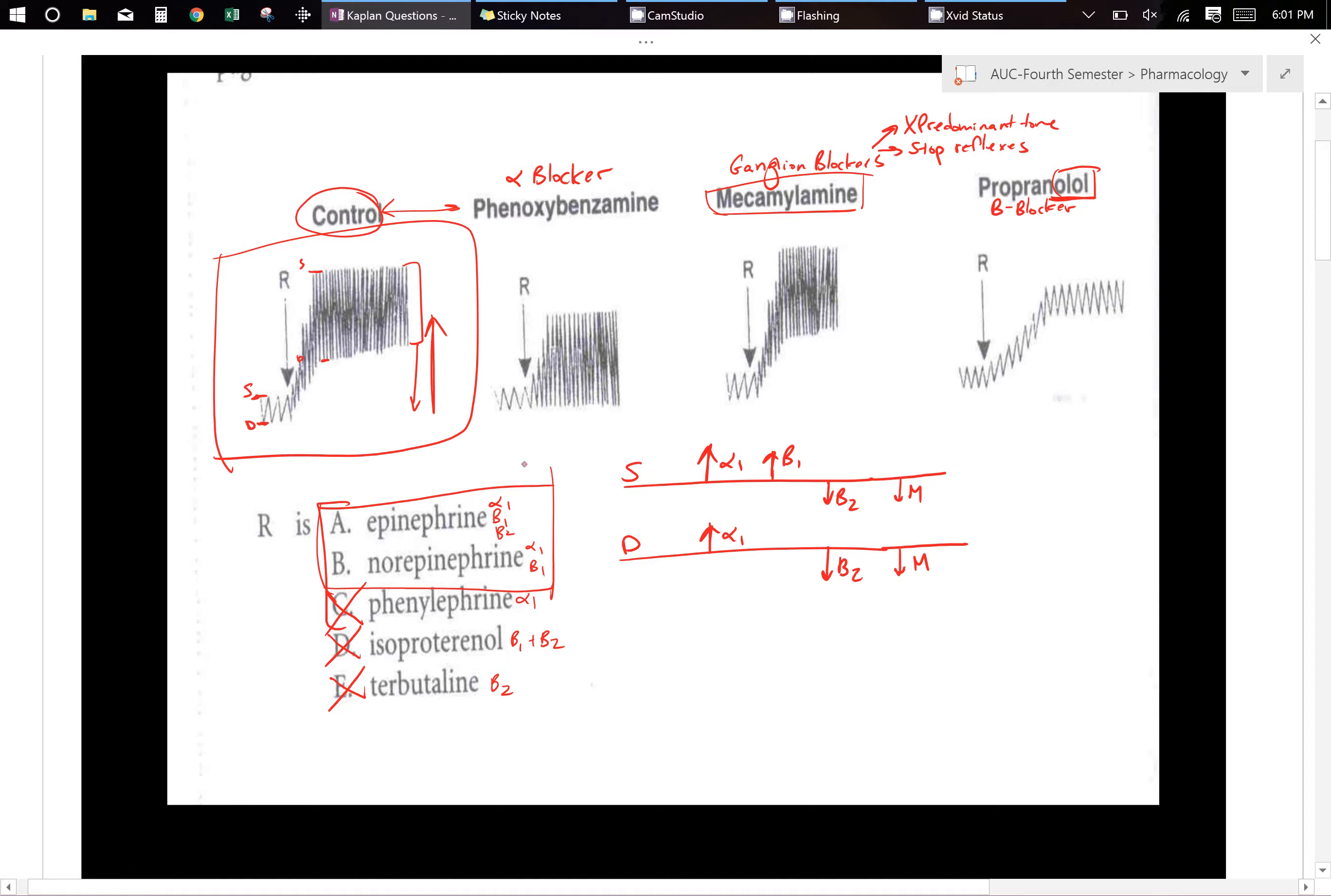But here's the thing. If you have an increase of blood pressure, your normal reaction is to decrease your heart rate. But your heart rate is increasing. Here. Do you notice that these things are really, really narrow? What could be causing an increase in heart rate?